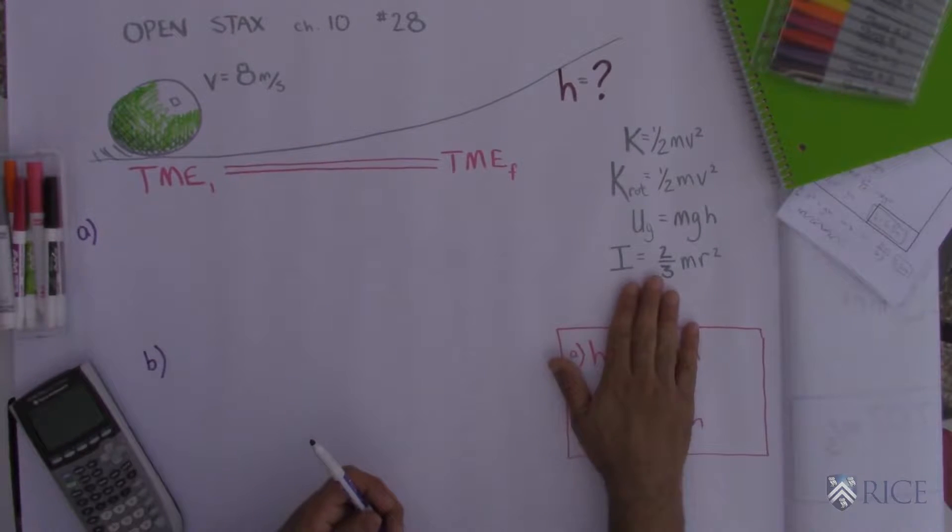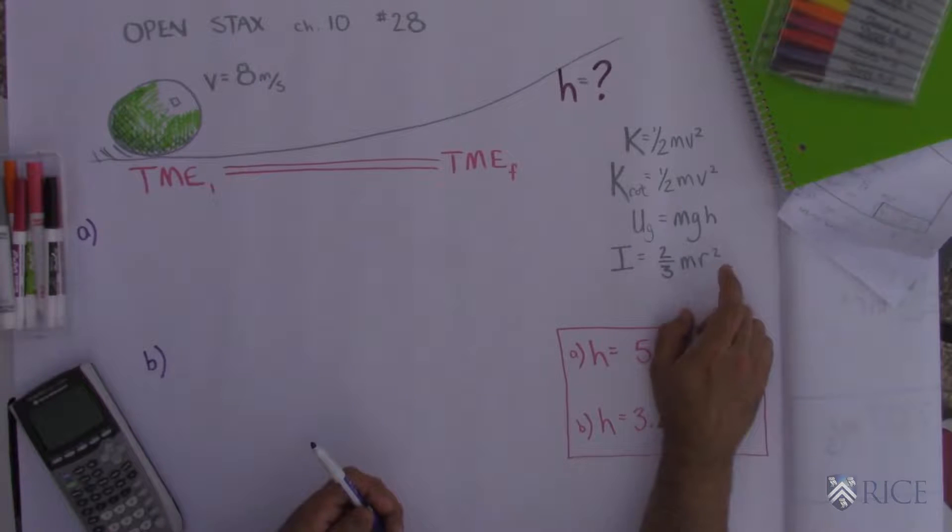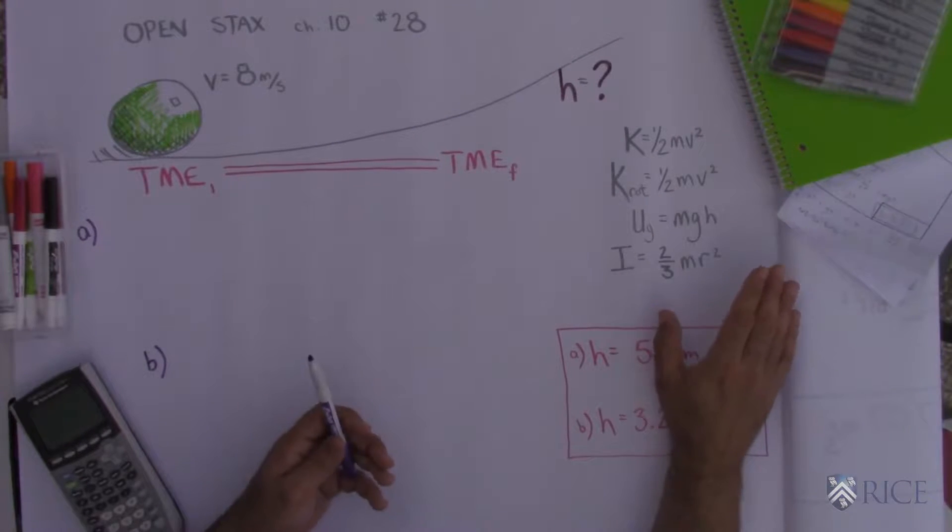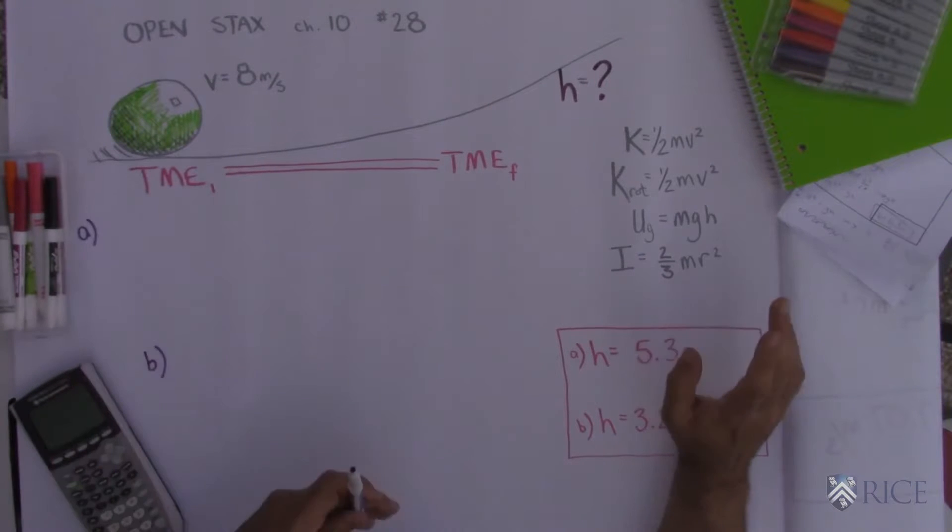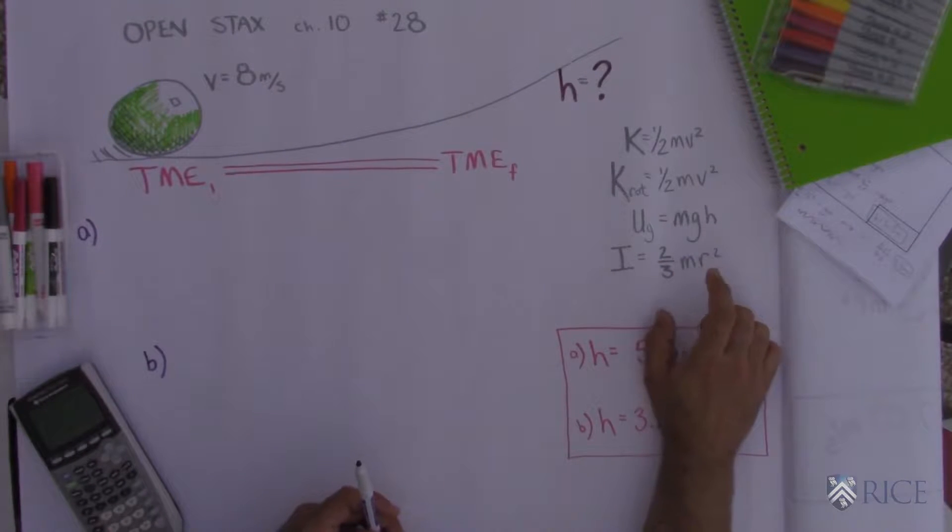The moment of inertia of this sphere is two-thirds mr squared. I don't make my students memorize that one. You might want to check with your professor and see if that's something that's gonna be given or something you're gonna need to look up. If it's a College Board test they'll just tell you. So this is a hollow sphere. It has a moment of inertia of two-thirds mr squared.